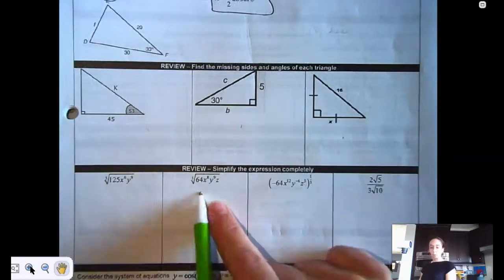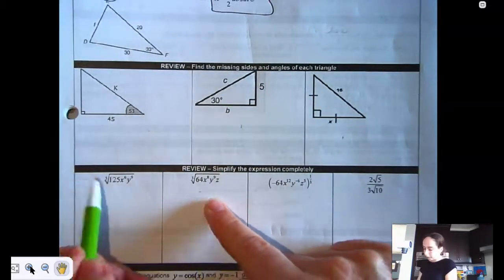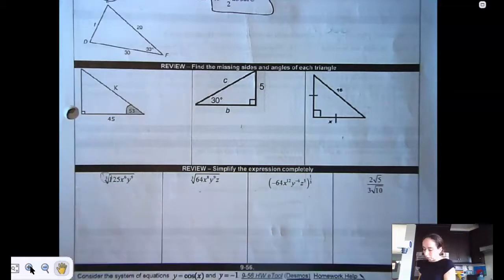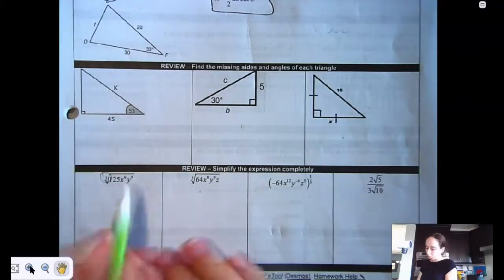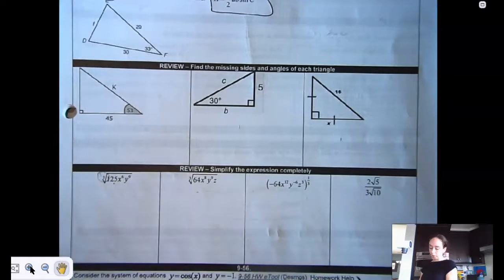Remember when we're simplifying, we might want to change it to exponential. We're trying to find what to the third power gives us 125 and simplifying from there.